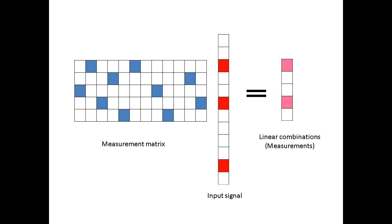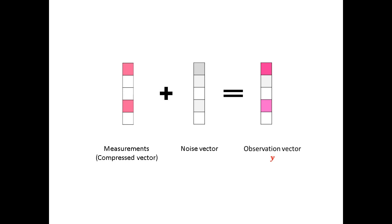Because the matrix is short, the matrix vector product will be a short vector, and this process is analogous to compression. Unfortunately, in many typical systems, the matrix vector multiplication is performed in analog hardware, and noise is introduced into these measurements. The way we model the noise is that we add a noise vector to the compressed vector, and the result is our observations vector, which we call y.